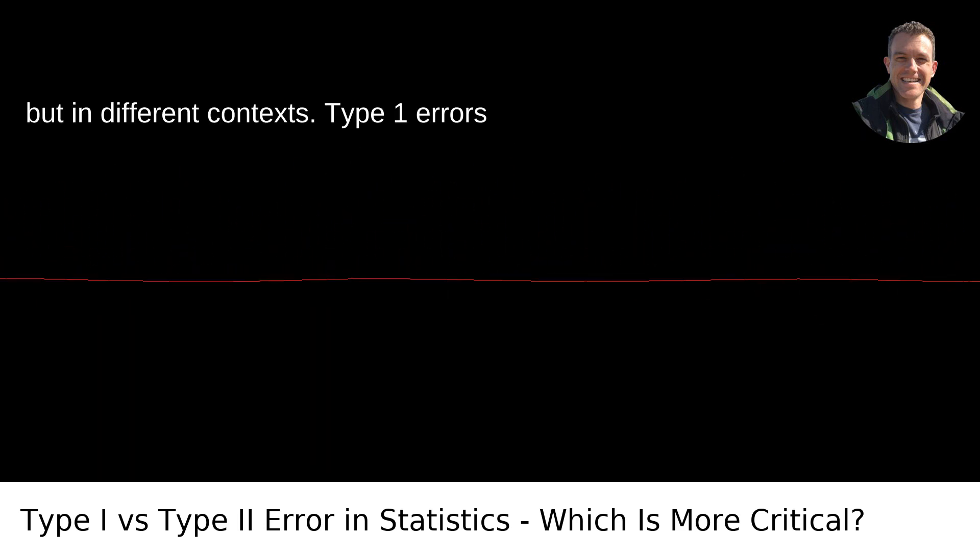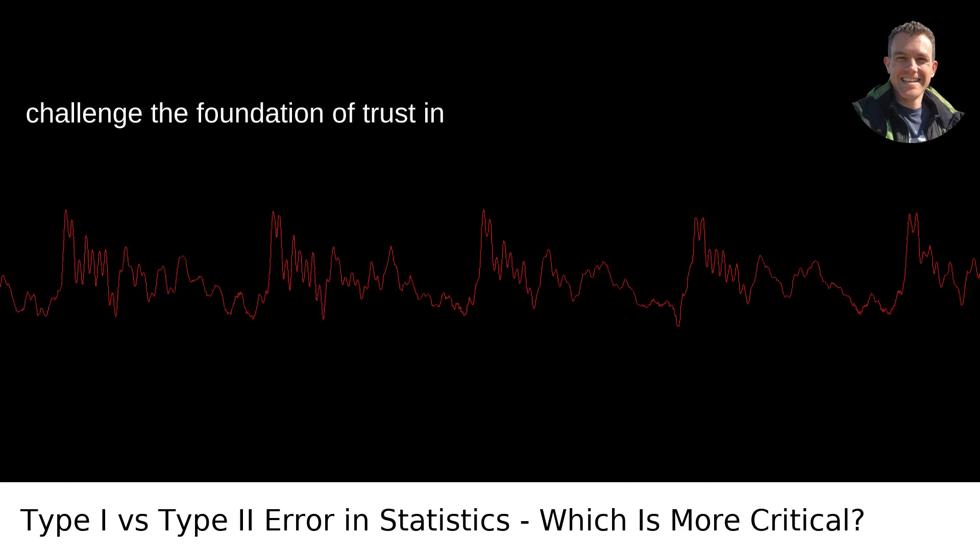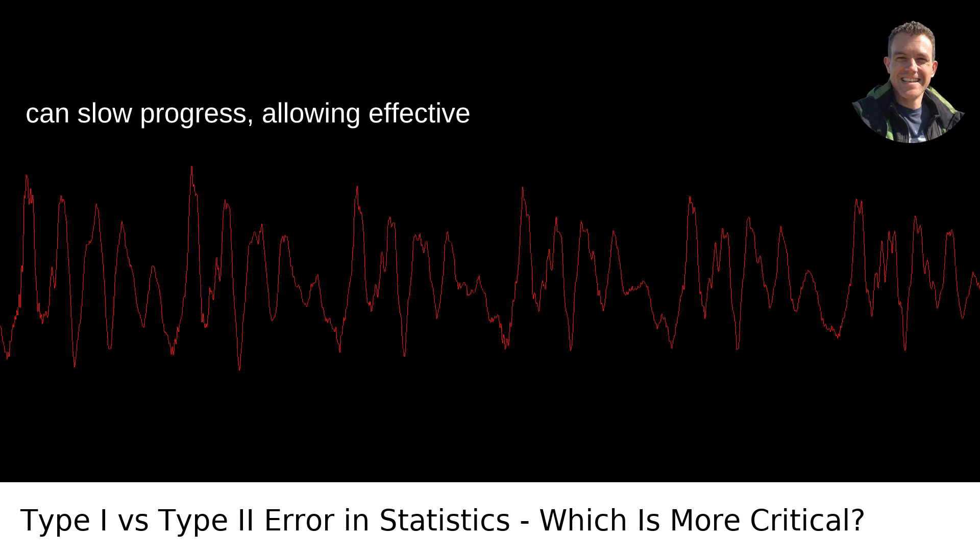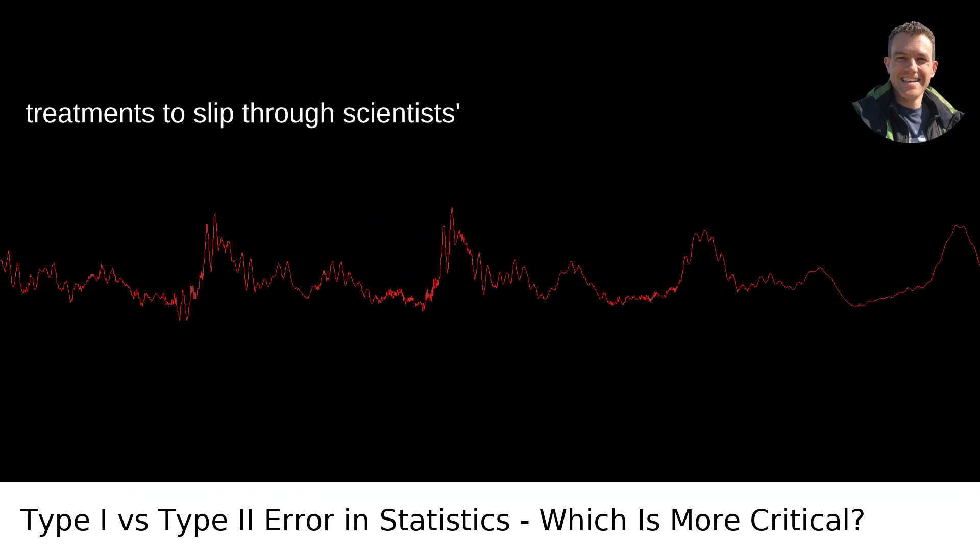Type 1 errors challenge the foundation of trust in scientific findings, while Type 2 errors can slow progress, allowing effective treatments to slip through scientists' hands.